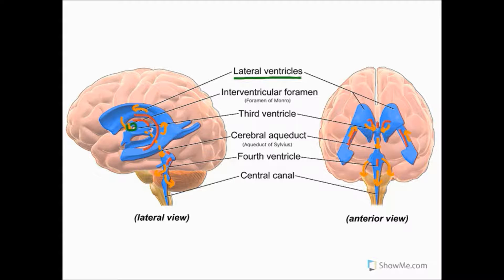The fourth ventricle has a characteristic diamond shape and is found within the pons and the upper part of the medulla.